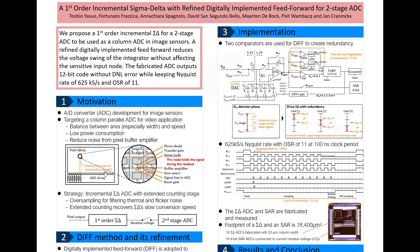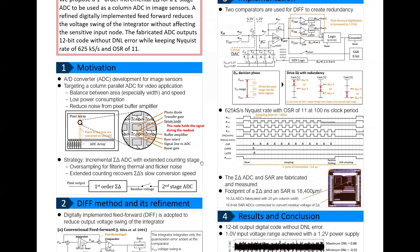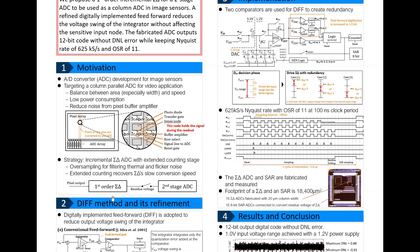We selected an extended counting ADC as a basic architecture. A sigma-delta ADC is used at the first stage to reduce noise with oversampling, and the second ADC converts the residue voltage to increase the resolution and conversion speed.